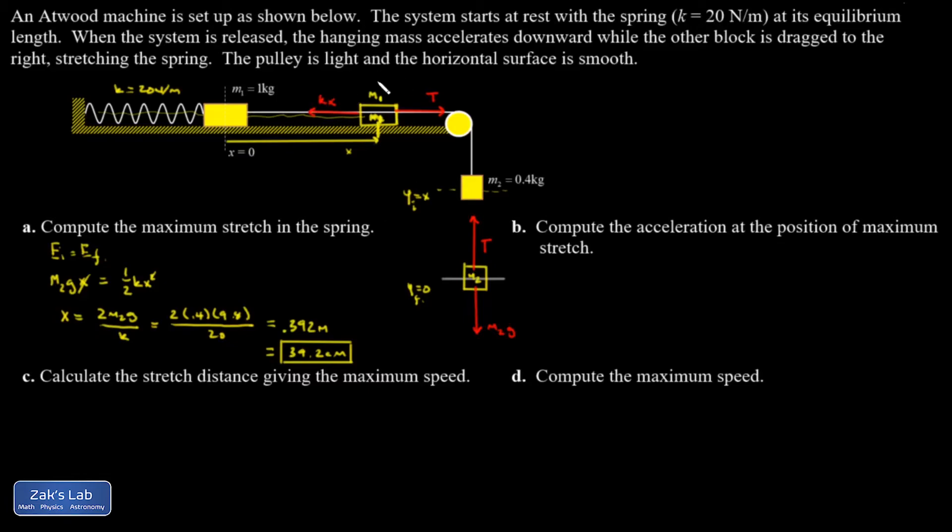And then the spring is going to be pulling to the left with a strength of kx. The acceleration direction for both of these is going to be back to where they came from because we're at the maximum stretch. And we're going to bounce and turn back around. And I'm going to call that the positive direction for the analysis on each of these masses.